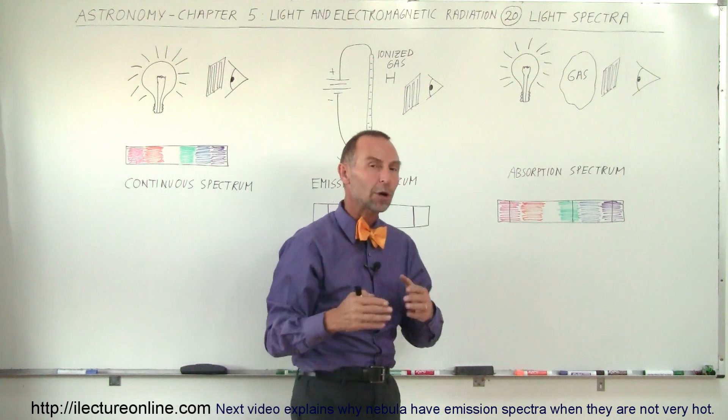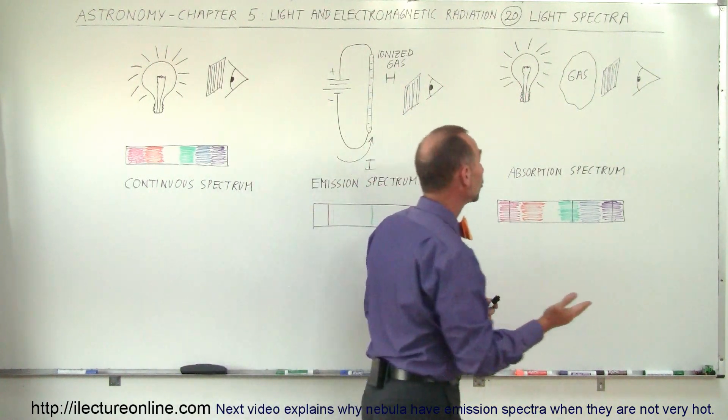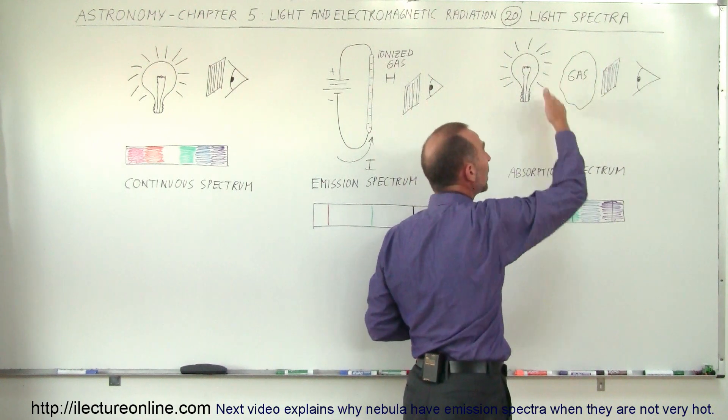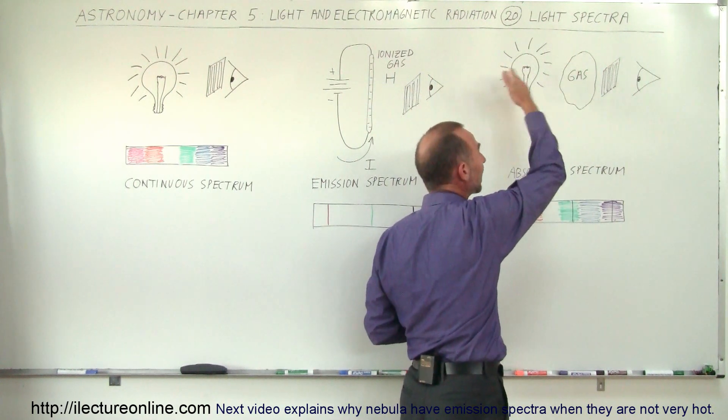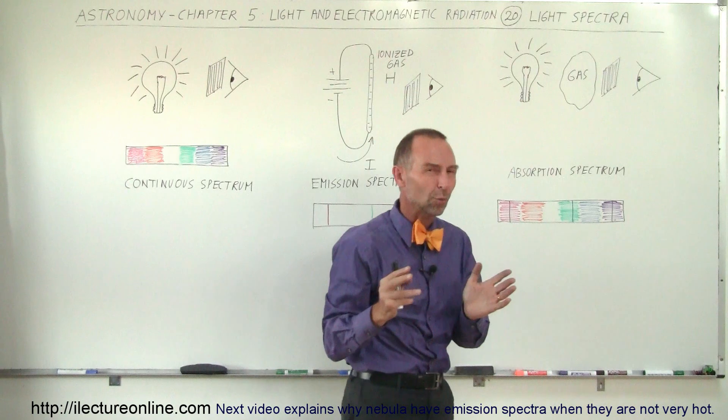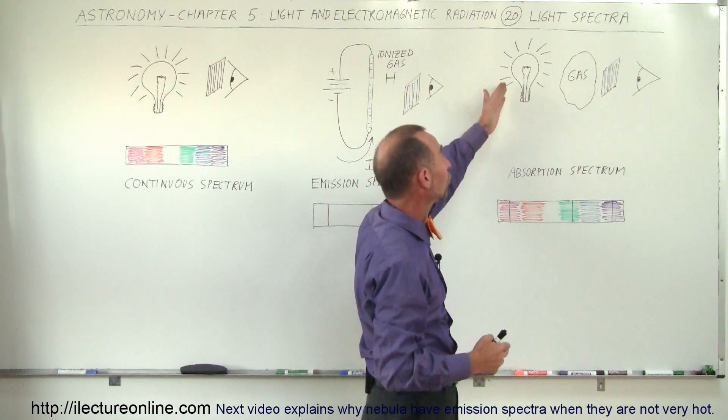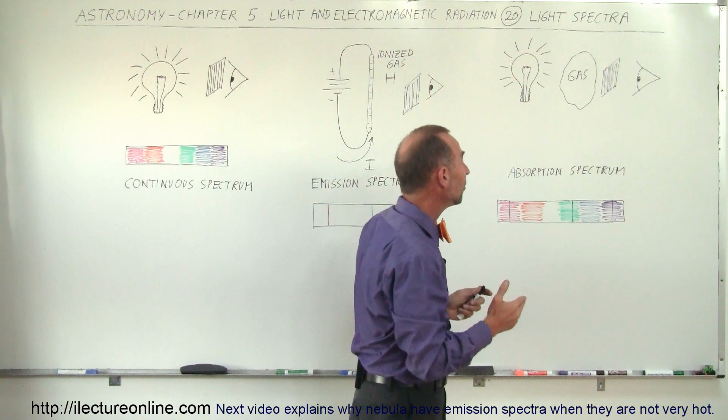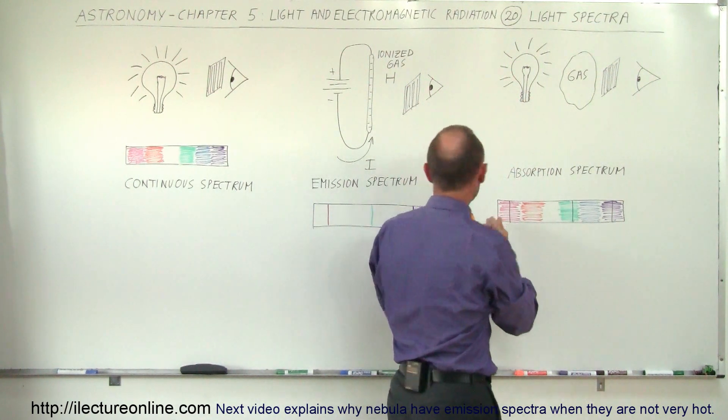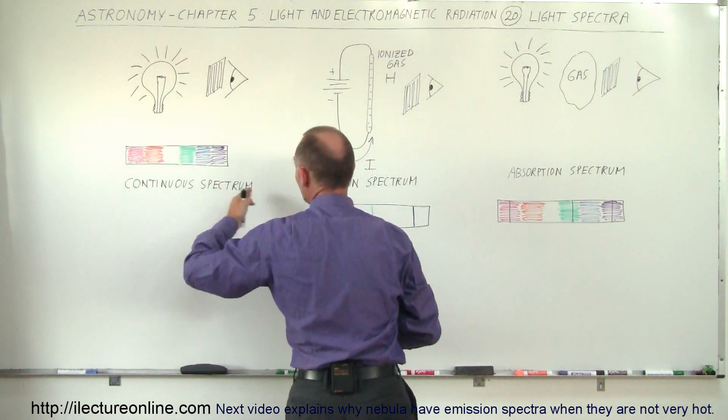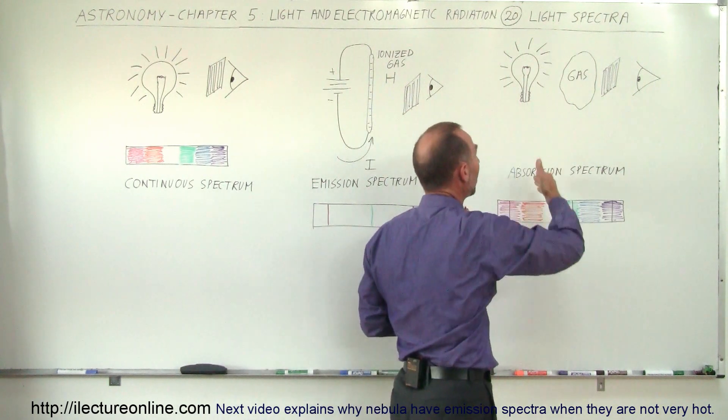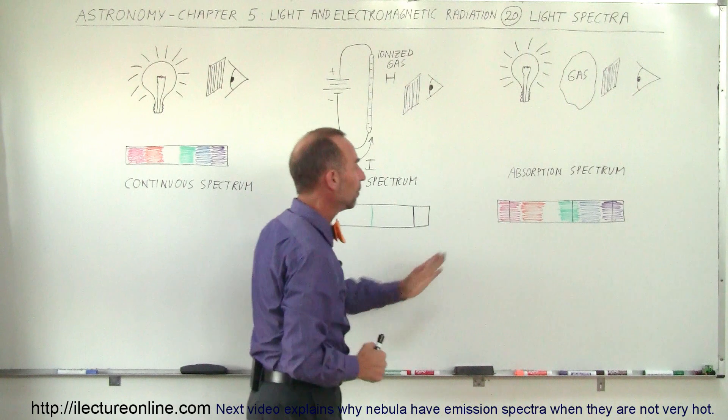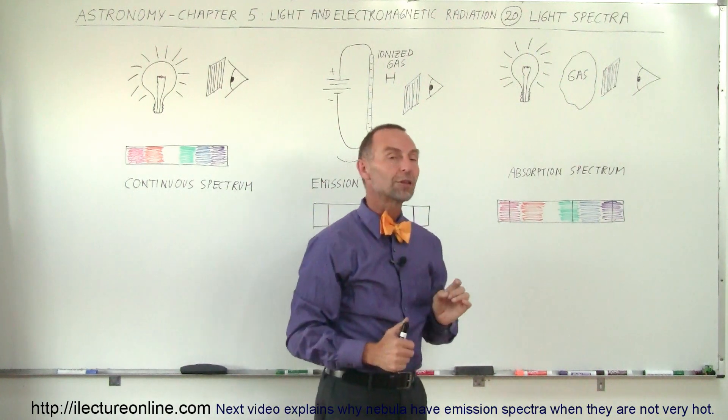Finally, we have what we call an absorption spectrum. If we have a situation where we have an incandescent light bulb and some gas in between, and the light goes through the gas - now of course that's not a realistic situation but I'm thinking more in terms of a star with maybe a nebula in front of it - instead of seeing a continuous spectrum like we would expect from a light bulb, specific colors are being absorbed.